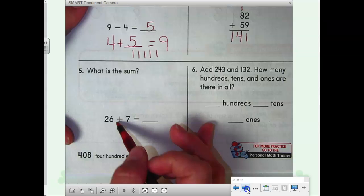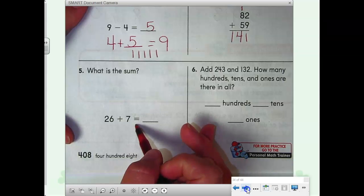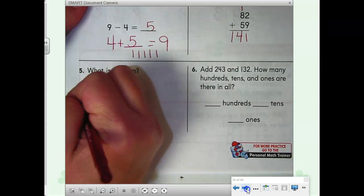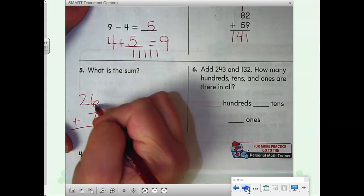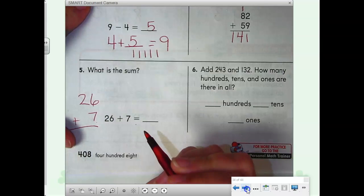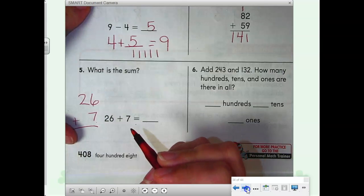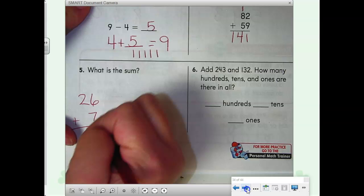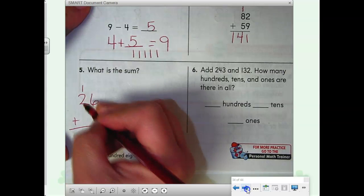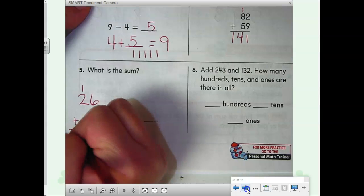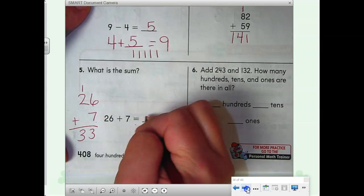26 plus 7. You can count on. Or you can turn it and make it into a column problem. 6 plus 7, 13. 2 plus 1 is 3. What's your answer? 33.